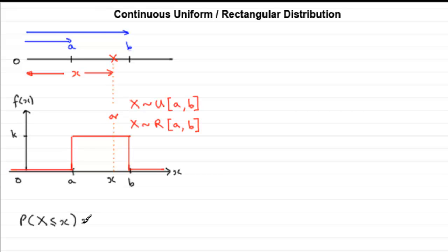If we're looking for the probability of being less than or equal to that observed value x, then it is given by the area in here. Let's just shade it. How am I going to work out that area? Being a rectangle, it's just going to be this distance, which is k units, multiplied by this length, which is x minus A. So that probability is going to be k multiplied by x minus A.